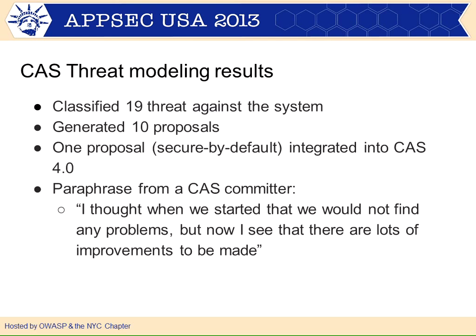So what are the results? We classified 19 threats against the system. We generated about 10 proposals for making changes, either adding to the security guide or improving security. One secure-by-default proposal — disabling proxying by default — is actually integrated into the next version of CAS. So we actually got something concrete into code. And a paraphrase from one of the CAS committers: 'I didn't think we were going to find any problems — we really did find things.' So we have some evidence that it was a useful exercise.